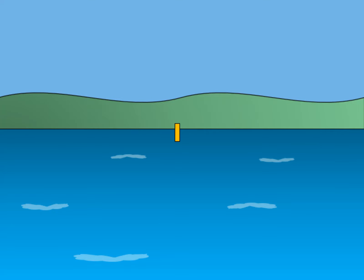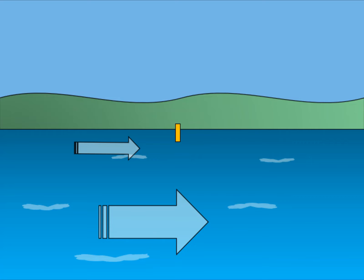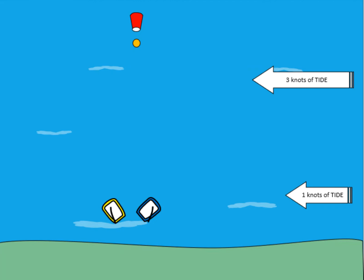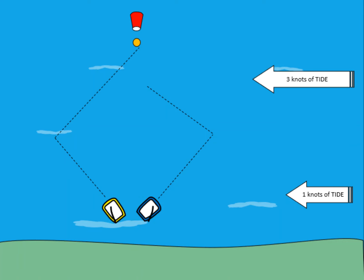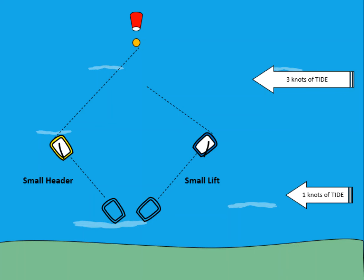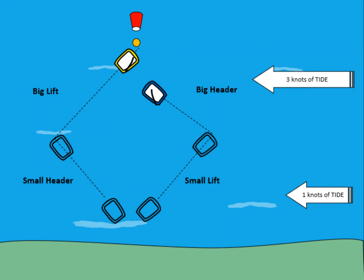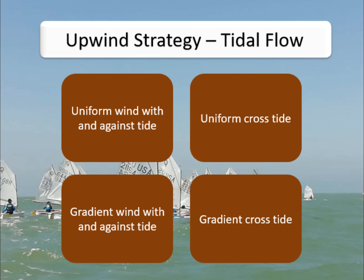Finally, let's look at a gradient tide going across the course, normally associated with an on or offshore wind. There is a change in the strength of the tide throughout the course — in this situation the tide is less for the first half of the beat and then increases nearer the top. So there are small tidal shifts to begin with that increase throughout the course. Therefore, even on a long line, taking the small header first and coming back with a larger lift is favored, as shown by the yellow boat.